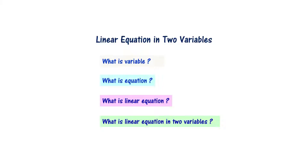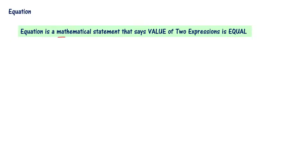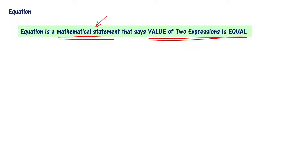Let us understand what is an equation. An equation is a mathematical statement that says the value of two expressions is equal. For example, the cost of 4 pens is equal to 60 rupees — that is, 4x is equal to 60. It is a mathematical statement. A mathematical statement is going to be an equation when the value of two expressions is equal.